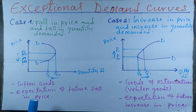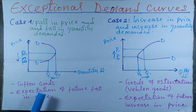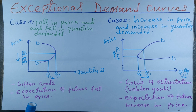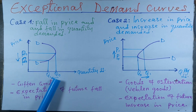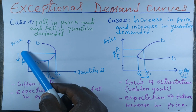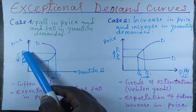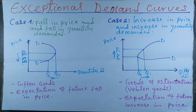The second case within this category is when consumers are expecting a future fall in price. They will reduce their quantity demanded now because they know that in future prices are going to be falling and they will purchase at that time. So their quantity demanded falls from Q0 to Q1 as price falls from P0 to P1.